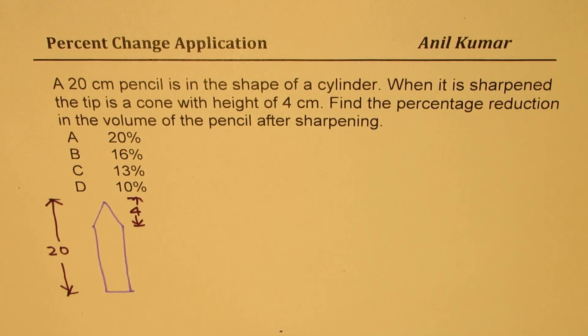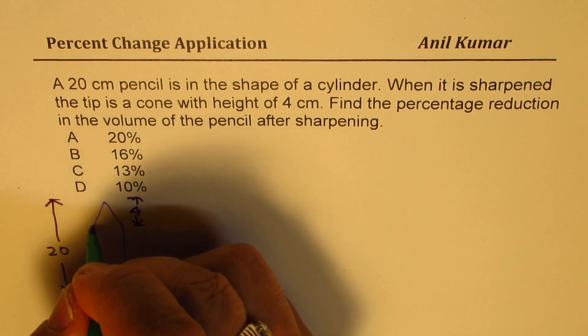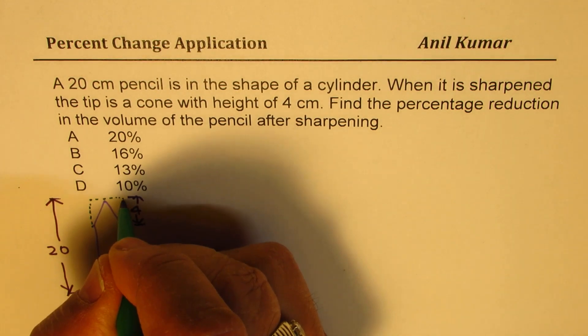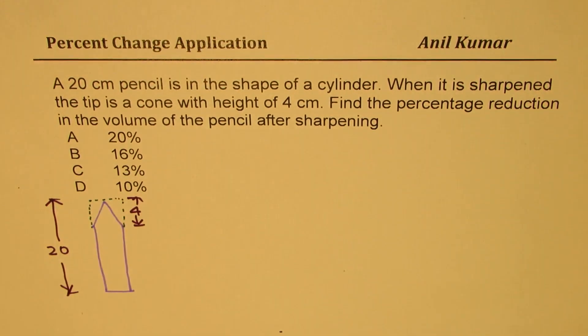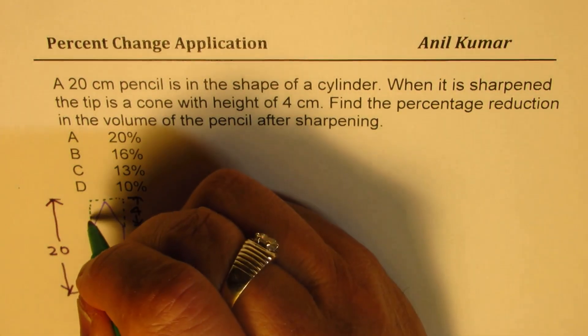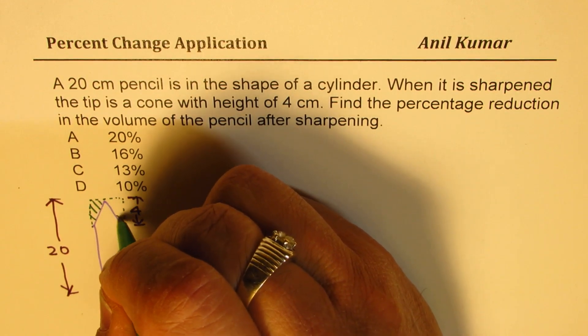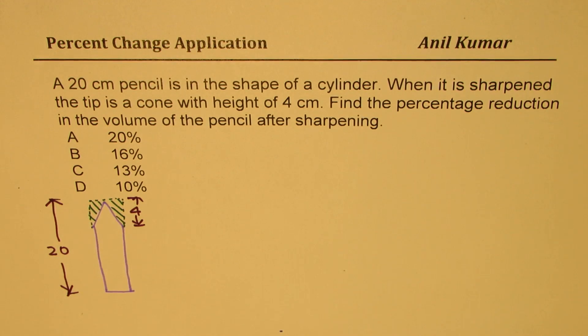So basically, as you can see here, there is reduction. One third remains, two thirds is lost. So you have to find this change, and percent change means over the whole volume. This change over the whole volume and then multiply by 100.